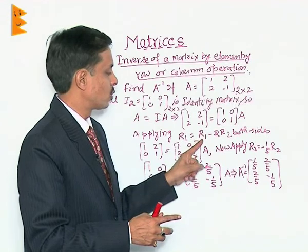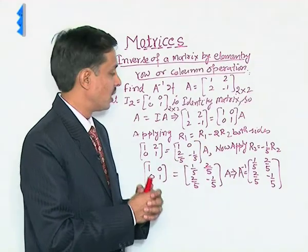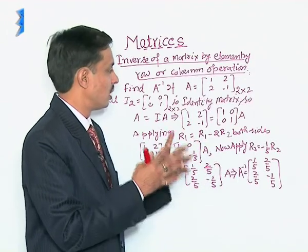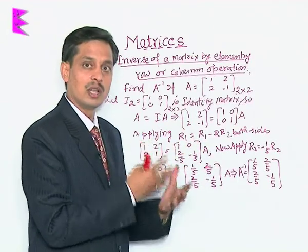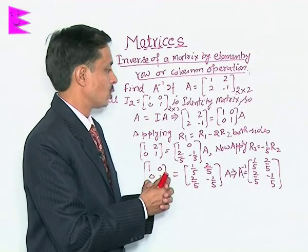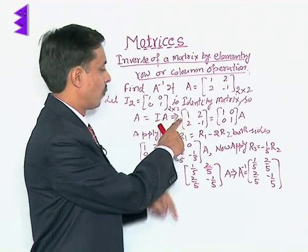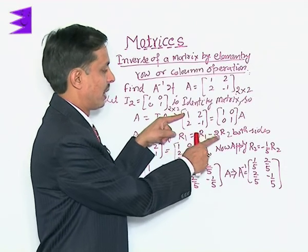Applying R1 equals R1 minus 2R2. Reason being we want to make it in the position that it should come out [[1, 0], [0, 1]]. So, if we apply it both sides, on the left hand side the first row equals row itself minus double of second.